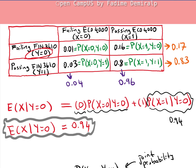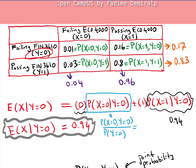As an additional example, let's compute P(X = 0 | Y = 0): divide the joint probability 0.01 by the marginal probability P(Y = 0) = 0.17, which rounds to 0.06.